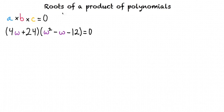One of those numbers must equal zero. Exactly. So, if we can find values of w that will make at least one of these two polynomials equal zero, then we know that when we multiply these polynomials together, the whole expression will equal zero.